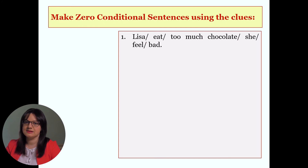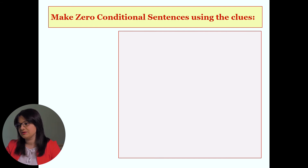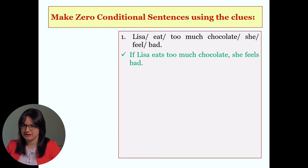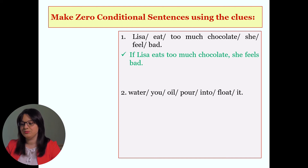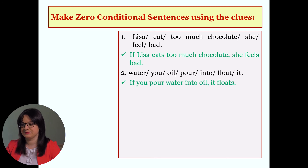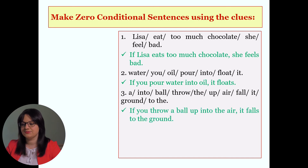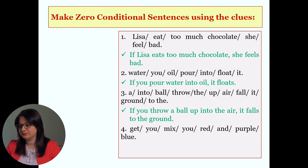Now let's practice. Exercise number 1: make zero conditional sentences using the clues. Stop the video and do the exercise. Let's check. Number 1: 'If Lisa eats too much chocolate, she feels bad.' Number 2: 'If you pour oil into water, it floats.' Number 3: 'If you throw a ball up into the air, it falls to the ground.' Number 4: 'If you mix red and blue, you get purple.'